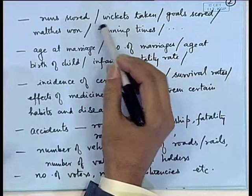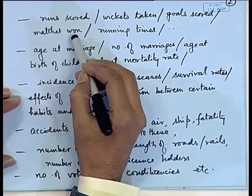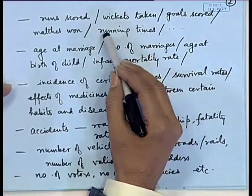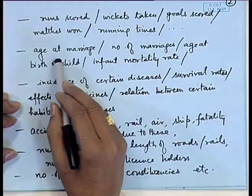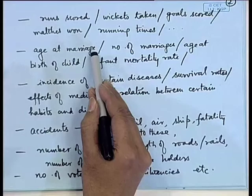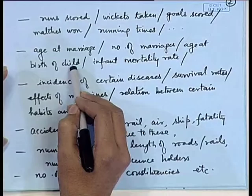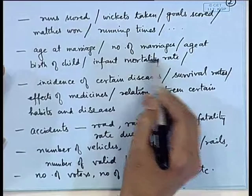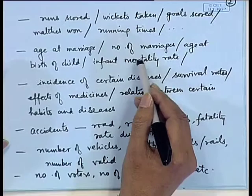Statistics are kept in areas such as sports, where we keep records of the runs scored by players, wickets taken in a cricket match, goals scored in football or hockey, how many matches are won by different teams, and the running times of top athletes for events like the 100 meter or 200 meter race. In social studies, we may keep records of the age at marriage of men and women, the average number of marriages per person in a lifetime, the age of parents at the birth of a child, and the infant mortality rate. These statistics are helpful for formulating cultural, social, and health policies.